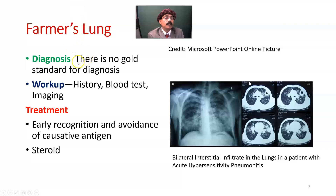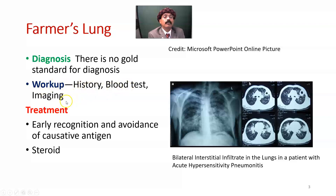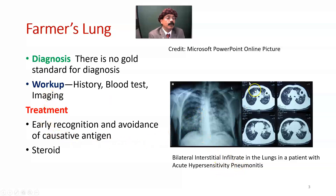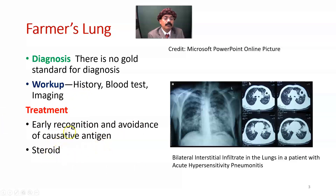How can you diagnose farmer's lung? There are no good standards for the diagnosis. Workup includes getting the history of the patient, blood tests, and imaging studies. In the imaging study, we see bilateral interstitial infiltrates like this — the lung in a patient with acute hypersensitivity pneumonitis. Treatment depends on early recognition and avoidance of the causative antigen. In later stages, if this does not work, the patient should be switched to steroids by a registered occupational physician.